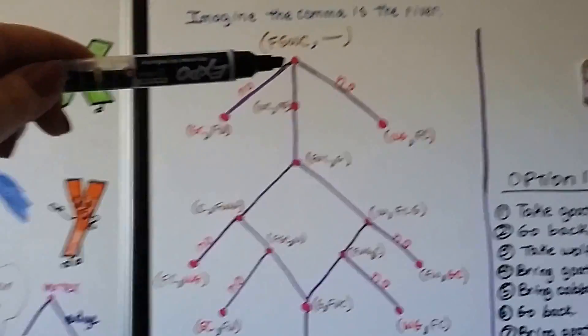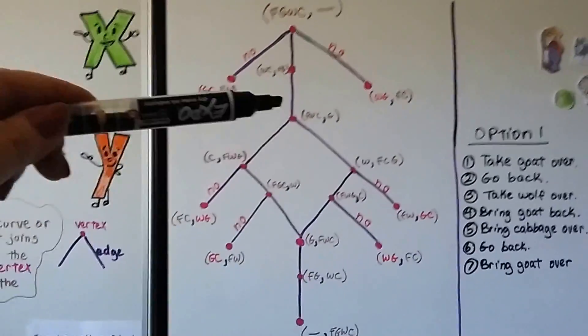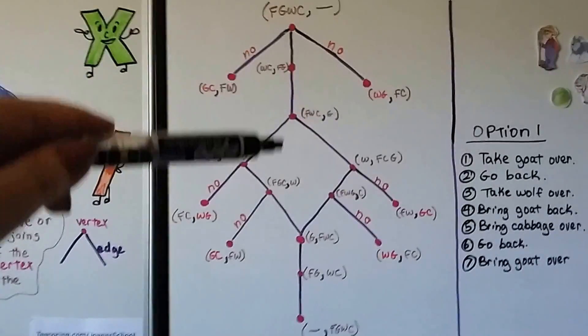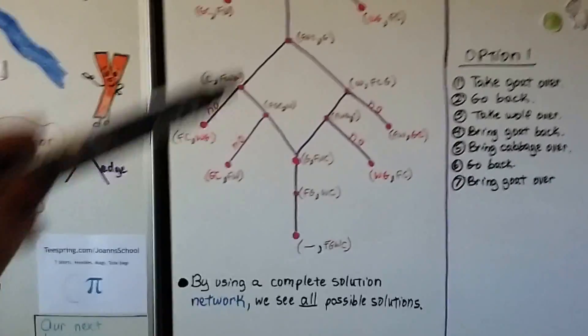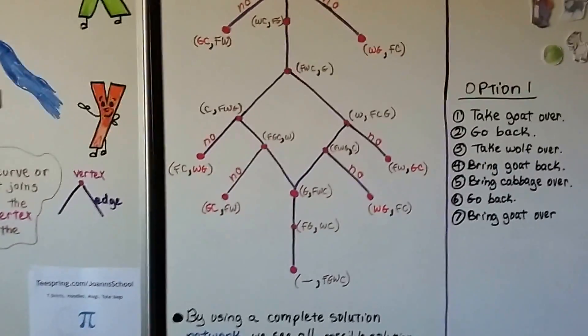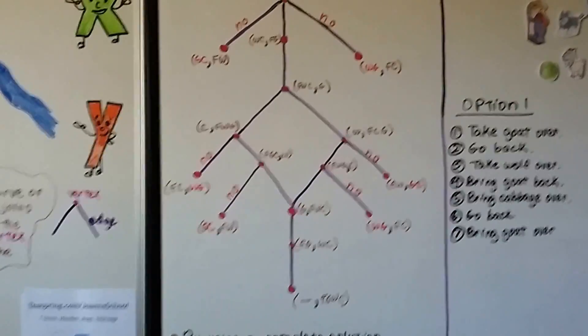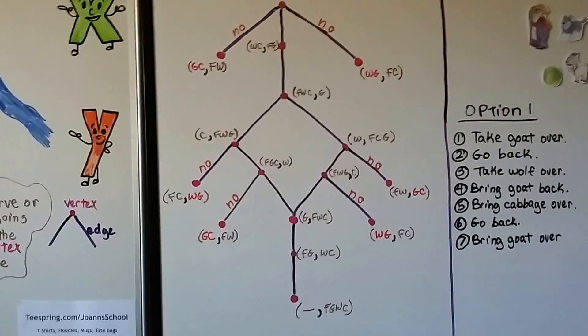So we've slowly progressed down and found all the possibilities. By using a complete solution network like this, we see all possible solutions instead of just trying to figure out one way. This way we see all the solutions.